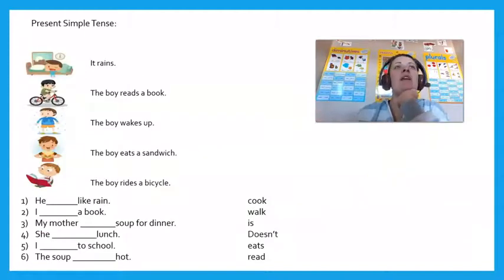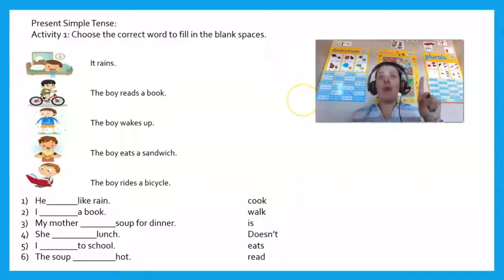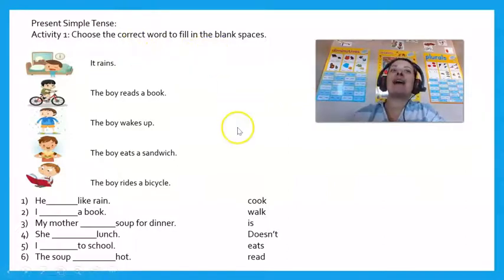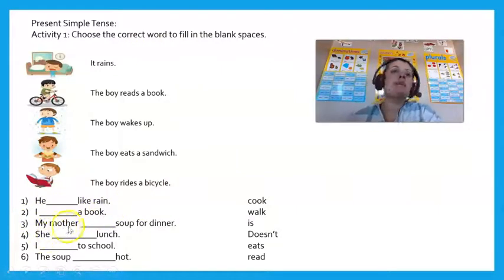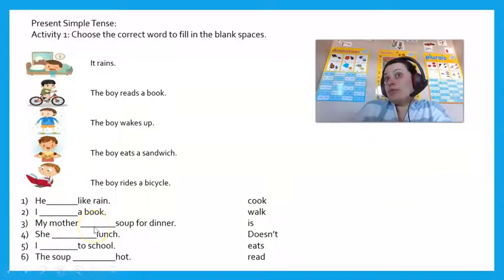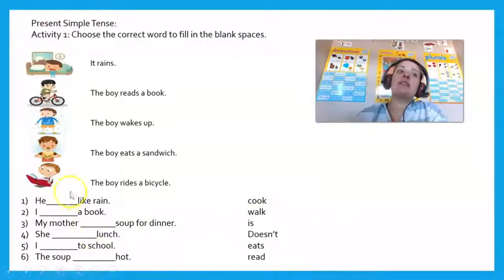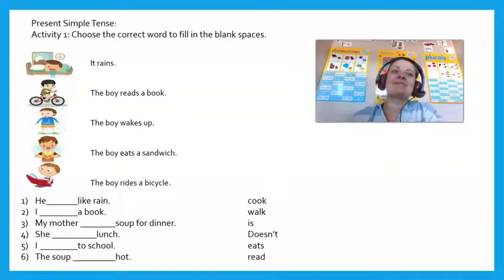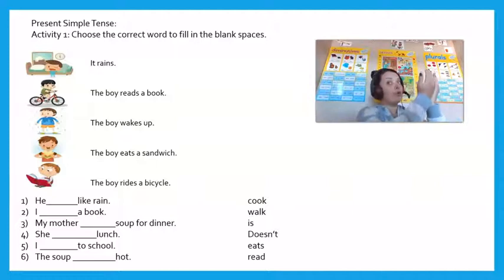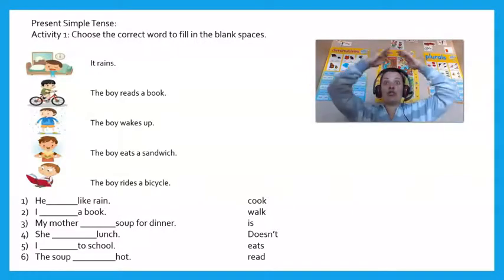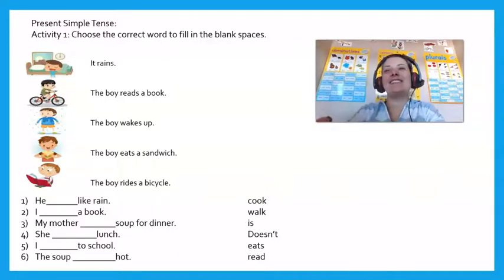Good job! So, present simple tense. Activity number one: choose the correct word to fill in the blank spaces. 'He ___ the rain.' 'I ___ a book.' 'My mother ___ soup for dinner.' So, choose a correct word from these words to fill in the blank spaces. You can start. The words are: rain, book, soup, lunch, school, and heart. Let's look at the answers.